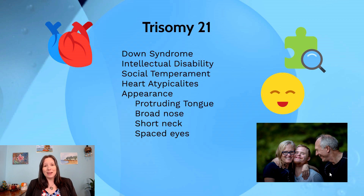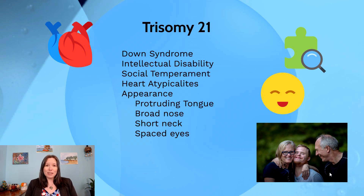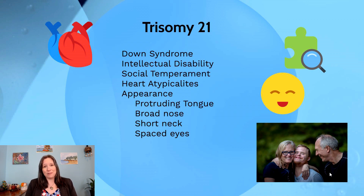There are certain phenotypical expressions associated with Down syndrome: individuals tend to have a shorter neck, broader nose, more widely spaced eyes, and their tongue may protrude slightly due to jaw size. It's important to stress that individuals with trisomy 21 can have very fulfilling and loving lives — they can get married, live independently or in adult group homes, and hold jobs. Through medical advances, people with trisomy 21 are now living into their 40s and 50s, and it is certainly not a fatal condition.